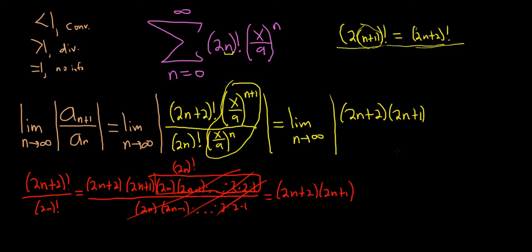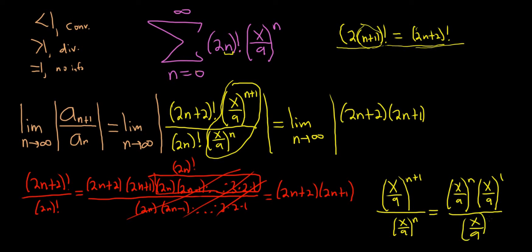So we have x over 9 to the n plus 1 over x over 9 to the n. And so we can rewrite the numerator as x over 9 to the n times x over 9 to the 1. Because when you multiply these, you add the exponents. So this cancels, and we're just left with x over 9.